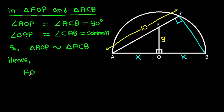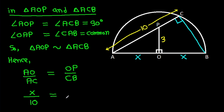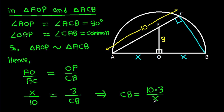Hence, AO over AC equals OP over CB. AO is X, AC is 10, OP is 3, so X over 10 equals 3 over CB. From here we can get CB equals 10 times 3 over X, which is 30 over X.